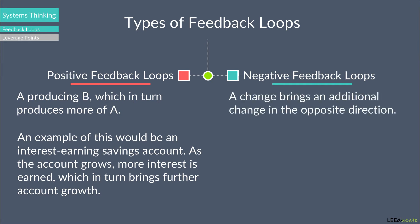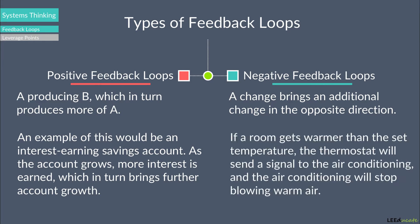In negative feedback loops, a change brings an additional change in the opposite direction. If a room gets warmer than the set temperature, the thermostat will send a signal to the air conditioning, and the air conditioning will stop blowing warm air. Understanding these feedback loops is crucial for designing sustainable buildings and neighborhoods. With the feedback loops providing the flow of information, the system can take action when there's a problem. Since the positive feedback loops don't stop, they may create problems in the systems if they're unchecked.